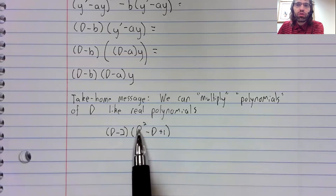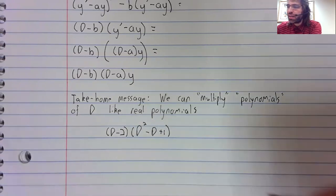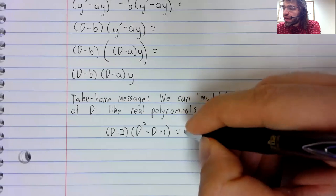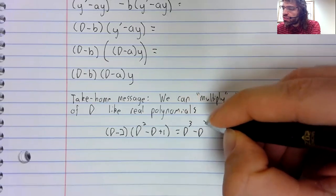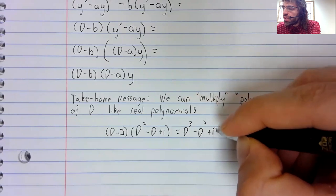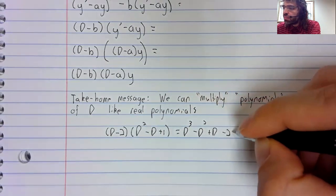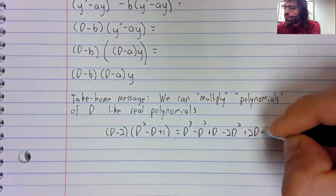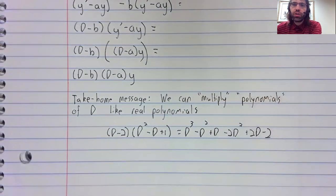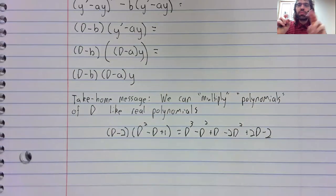This D squared represents the second derivative. We're not actually squaring anything. Nevertheless, we can deal with this exactly as if it were a real polynomial.